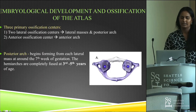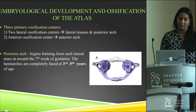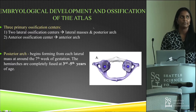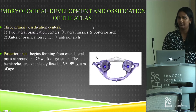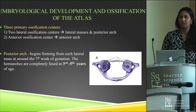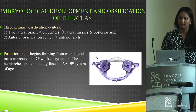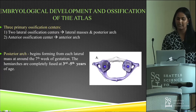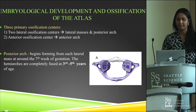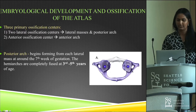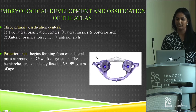Let's go into the embryology and development of the atlas. Normally there are three primary ossification centers: two located laterally and one anteriorly. Looking at this picture, you can see an ossification center in each lateral mass. At around the seventh week of gestation, it grows dorsally to give you your posterior arch — which is longer and thinner — compared to the anterior arch, which is shorter and thicker.